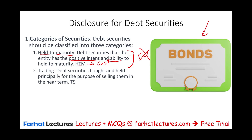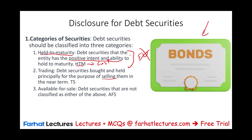We also have trading securities — bought and held for a short period of time for the purpose of selling them in the near future to make a profit. And we have the third category, available for sale — they are not trading and not held to maturity, somewhere in between. So: Held to Maturity is HTM, Trading Securities is TS, and Available for Sale.